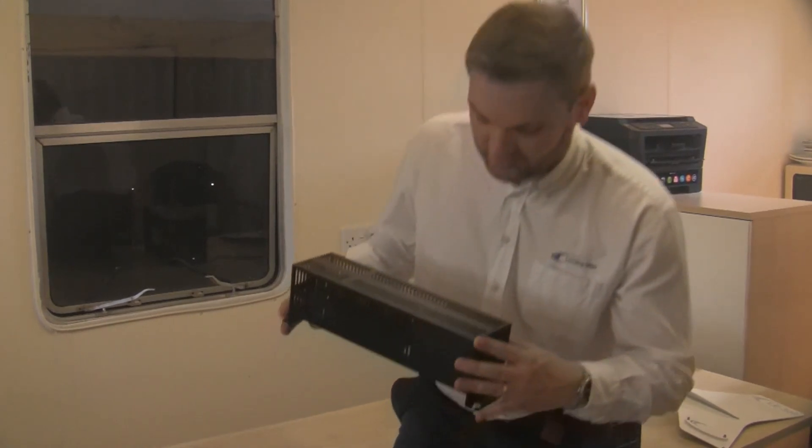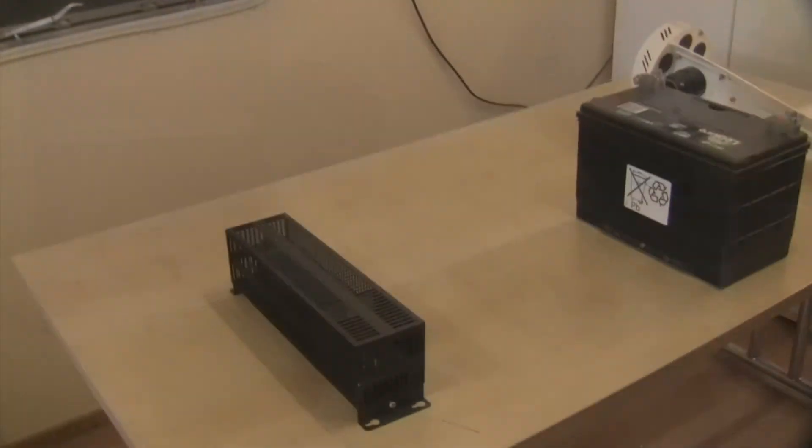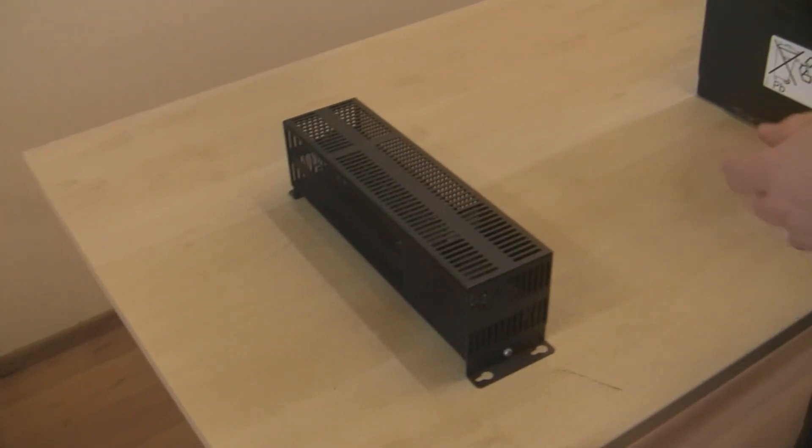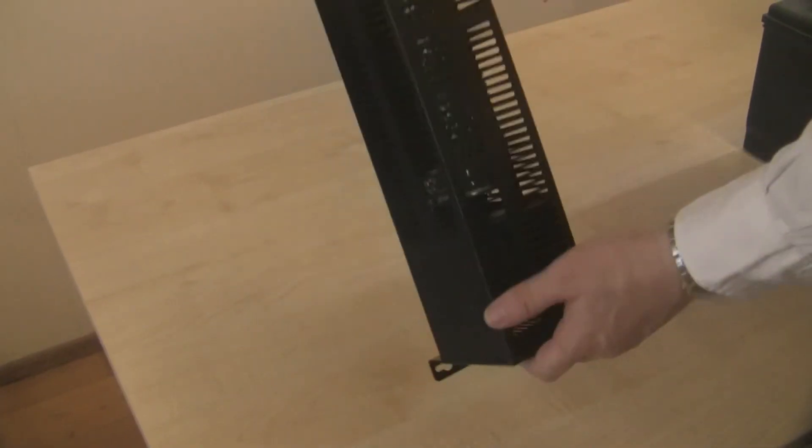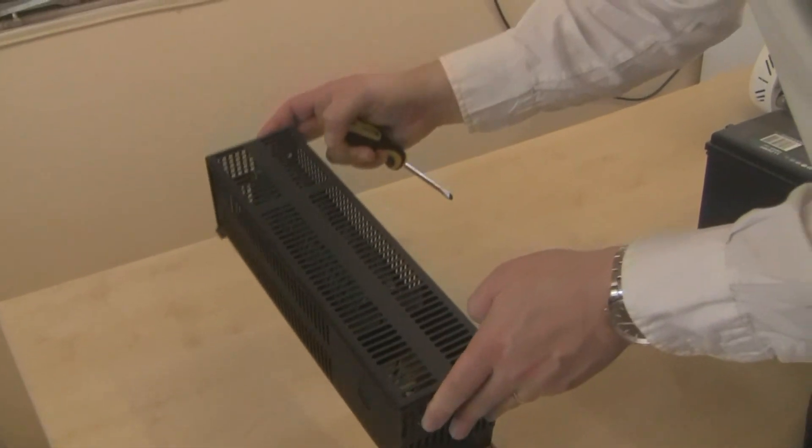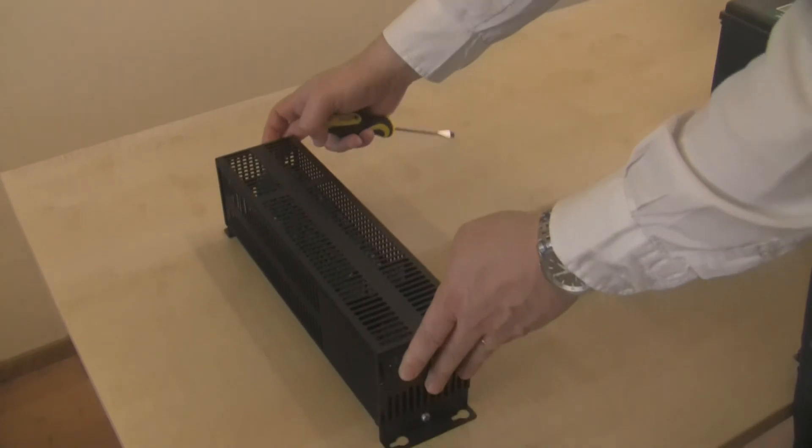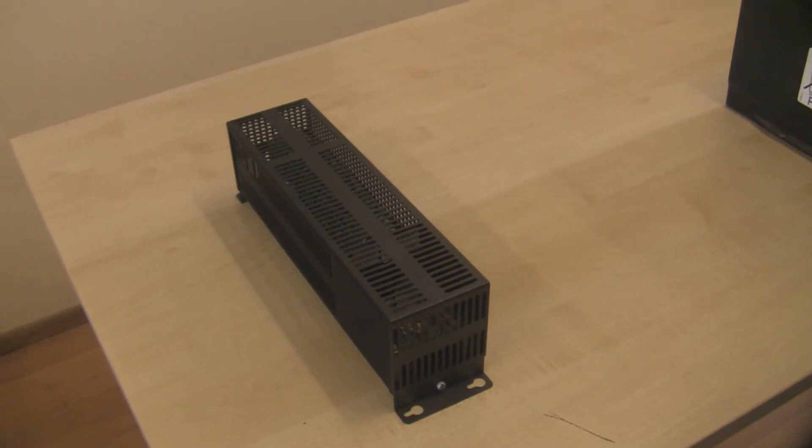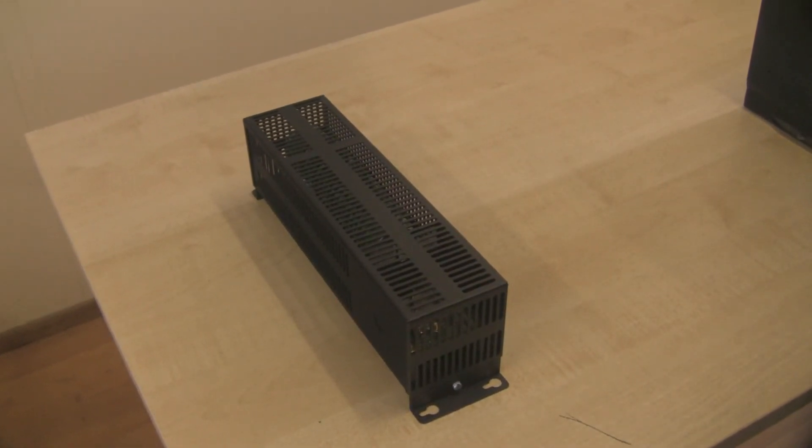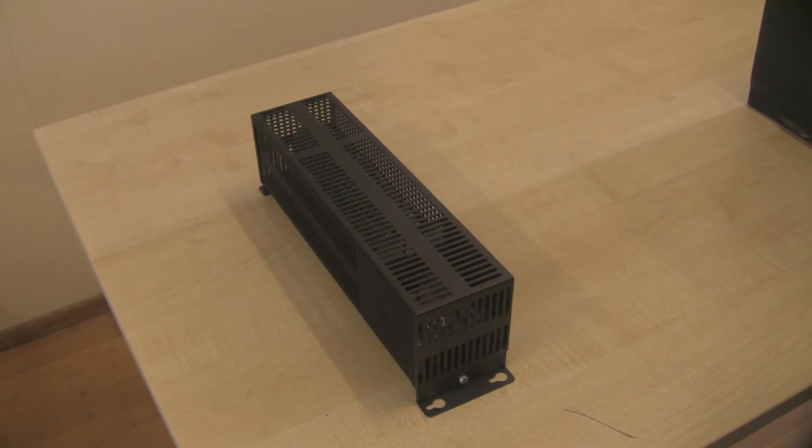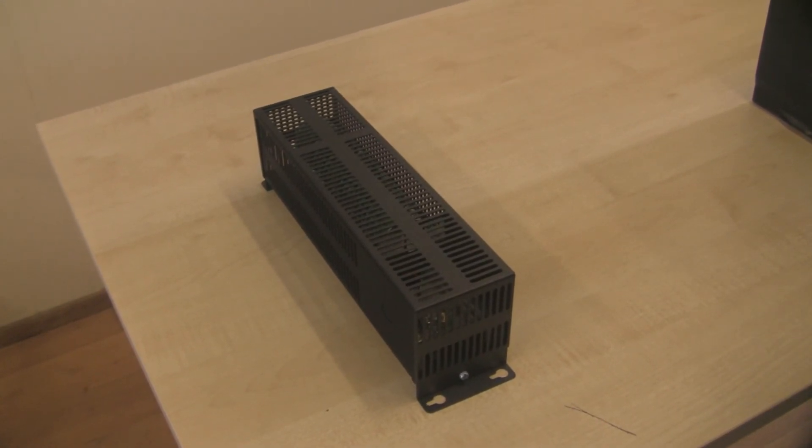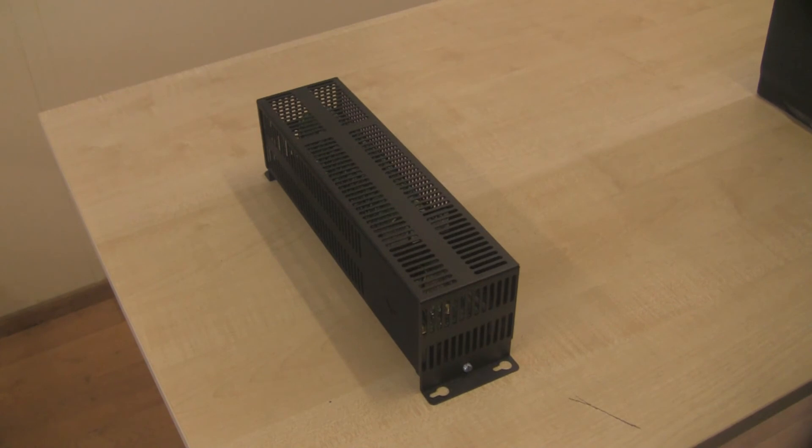So today we're going to take a look at this unit. The first thing when unpackaging the unit is it's approximately 300 millimeters long and this would usually be mounted onto a control panel, maybe in the engine bay of your yacht or on a control panel next to the batteries depending on the type of off-grid system you're looking at.